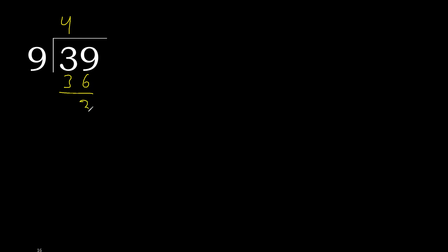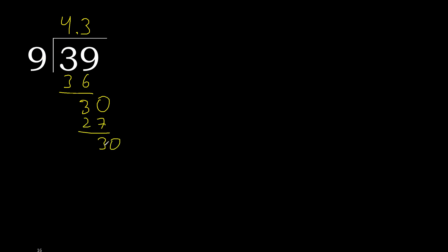Next, there is no number, so we complete with 0 here after the decimal point. So we have 30. 9 multiplied by 4 is greater, so 9 multiplied by 3 is 27. Subtract: 30 minus 27 equals 3.